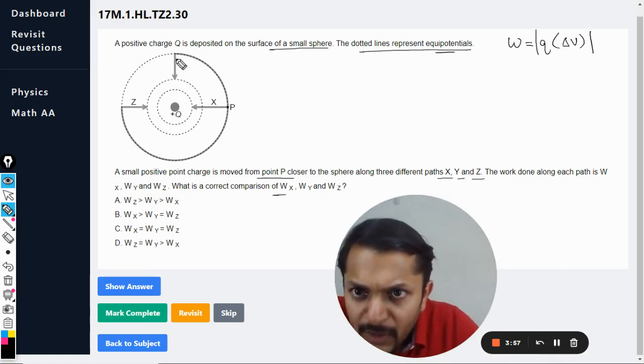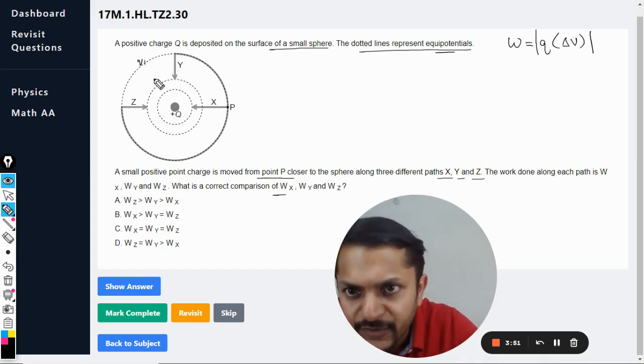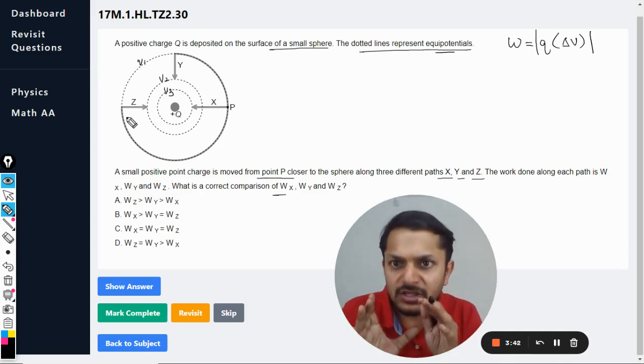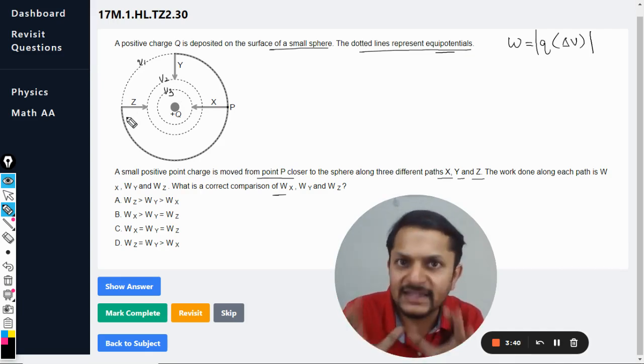First of all, Y is having the same potential changes. I'm going to call this V1, V2, and V3. So for Y, the work done is Q into V2 minus V1. For Z, it is also Q into V2 minus V1. So the work done for Z as well as for Y is the same.